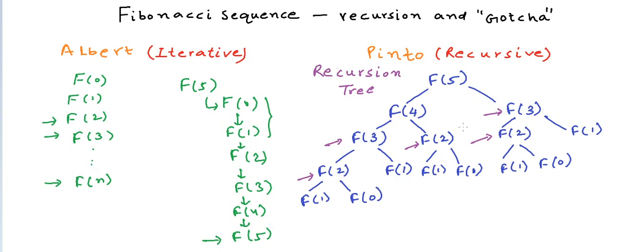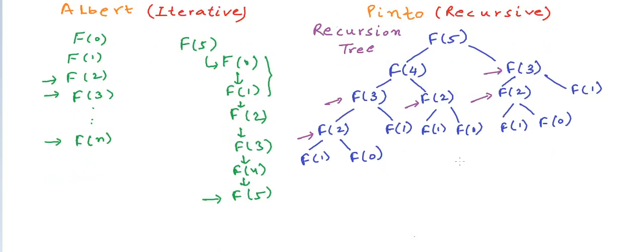In the iterative program while we are calculating each state or each value of fi exactly once, in the recursive implementation we are calculating it multiple times. For example, if n is equal to 5, we are calculating f2 thrice. When n is equal to 6, we are calculating f2 5 times. When n is equal to 8, we calculate f3 13 times and if n is equal to 40 that we had used in our example, this number is 63245986 which is crazy.